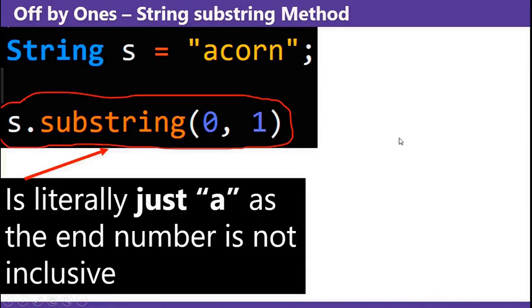Off by ones - String substring method. String s equals acorn. s.substring 0, 1 is literally just a, as the end number is not inclusive.